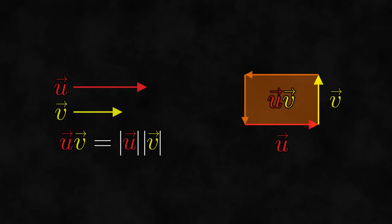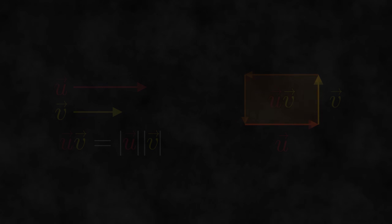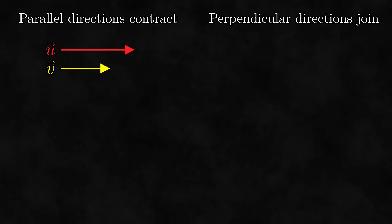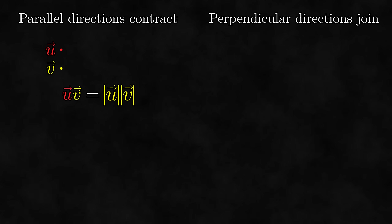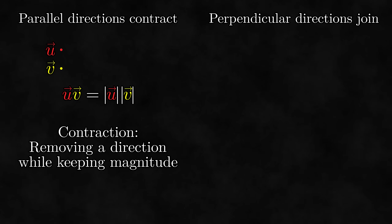So what does the geometric product of multivectors look like geometrically? We already saw a couple videos ago how the geometric product affects vectors geometrically, so let's start there. The fundamental geometric idea behind the geometric product is that parallel directions contract, while perpendicular directions join. When we have two parallel vectors pointing in the same direction, the geometric product is the product of their lengths. The two copies of this direction disappear in the product — not quite cancelling, since the magnitudes are still present, but the directions themselves are gone. This is what we mean by contraction: it removes a common direction from consideration while still including the magnitude.